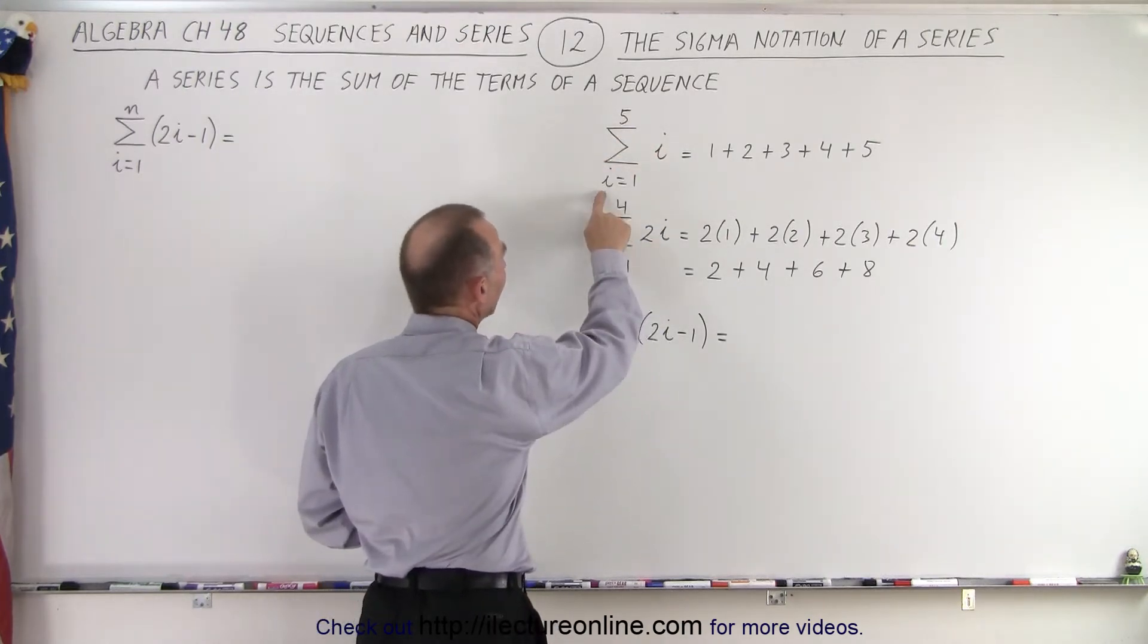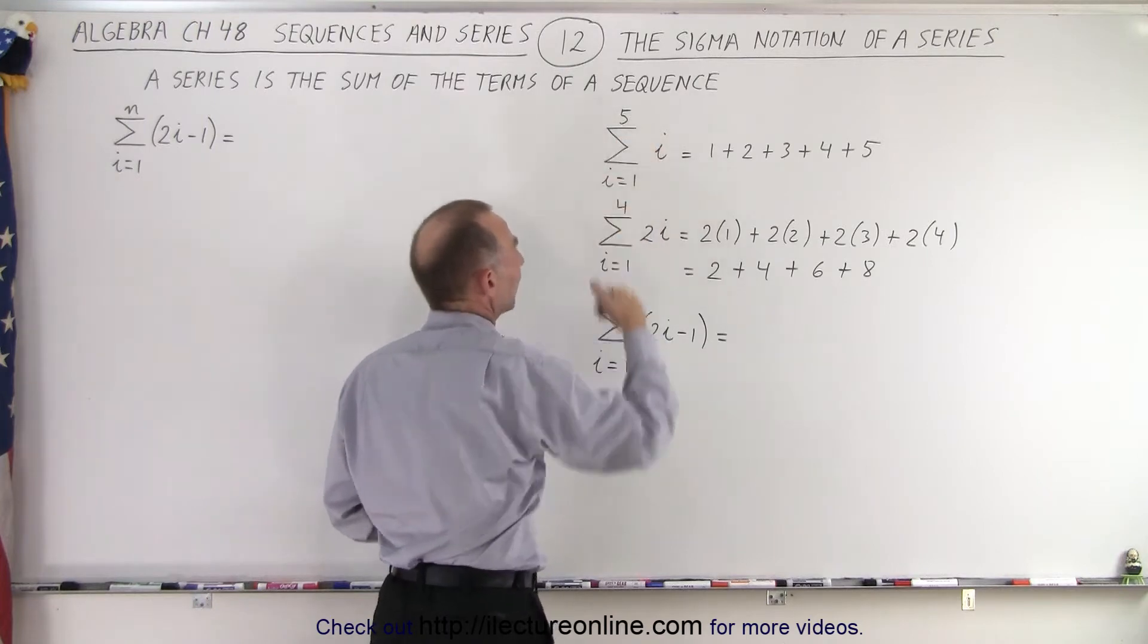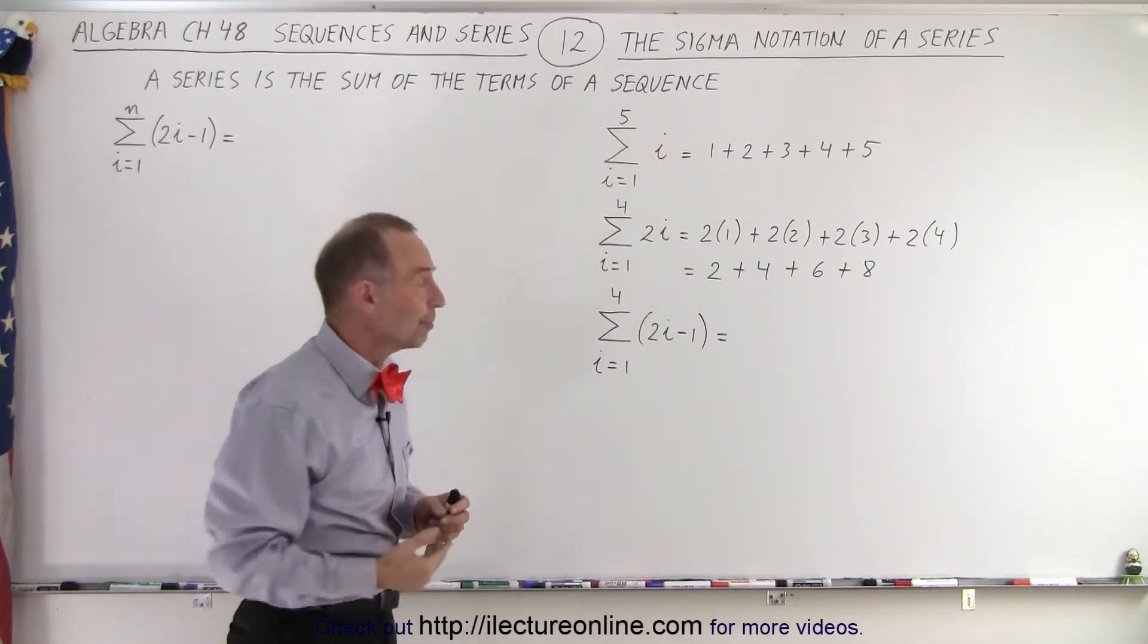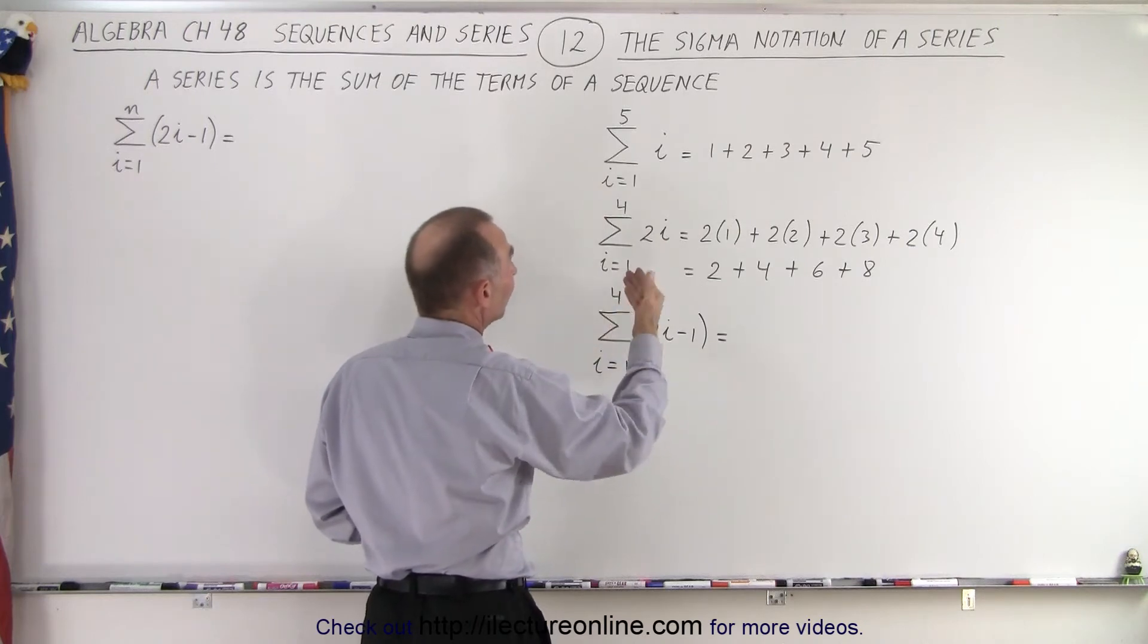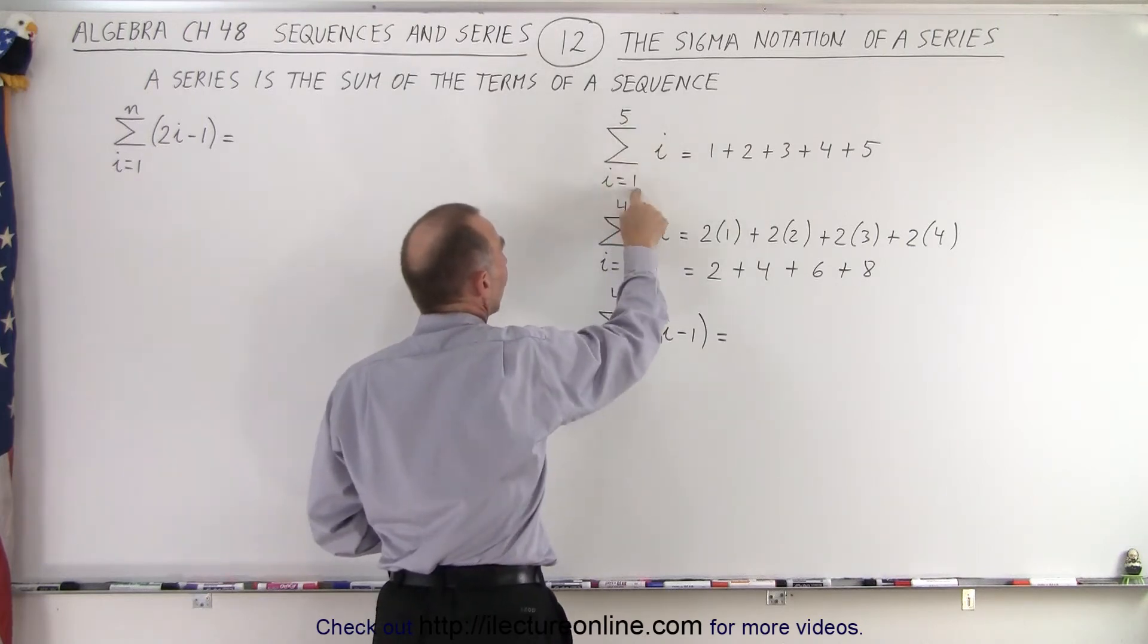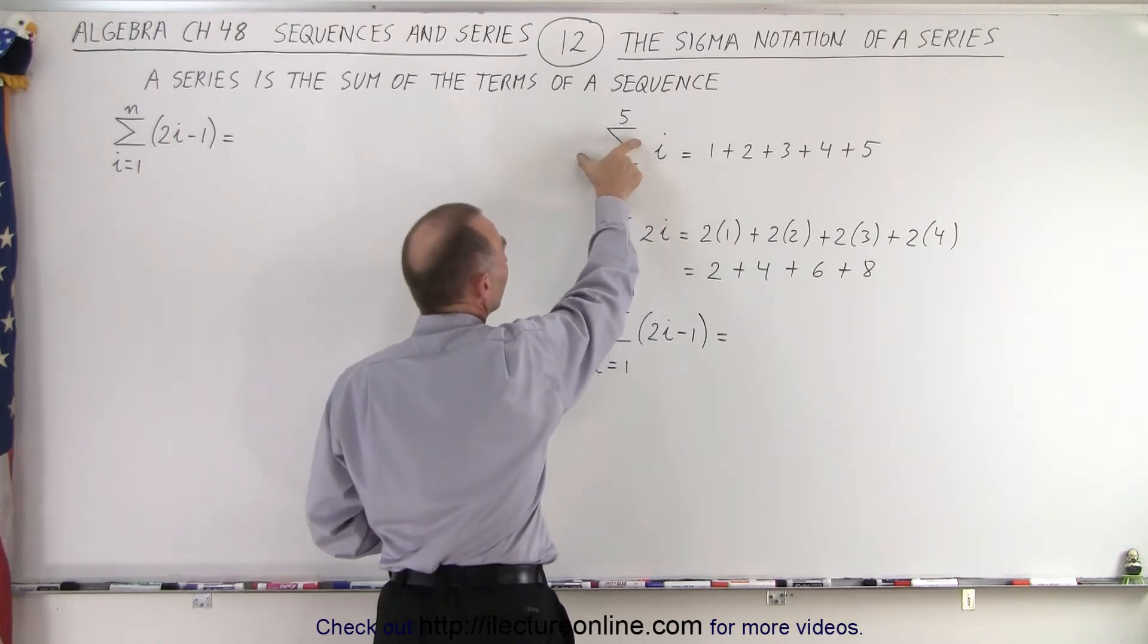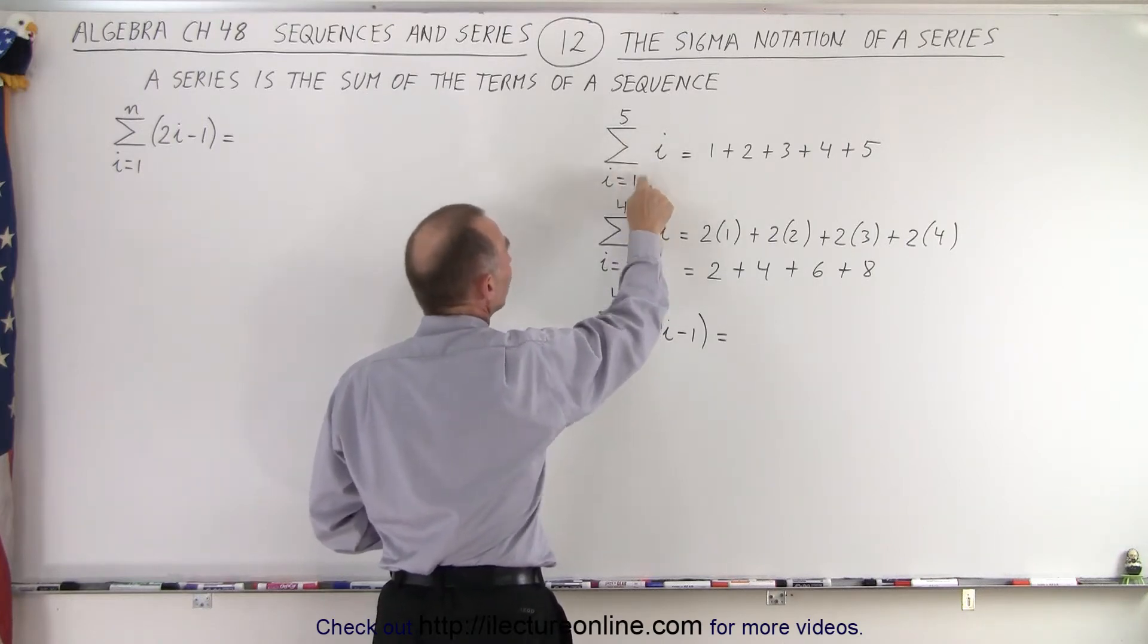And here we write when i goes from 1 to 5 and i goes up in integer format so i will become 1, then 2, then 3, then 4, then 5. This is the upper limit of the number i starting from the lower limit and here we have the sum of i's when they go from 1 to 5.